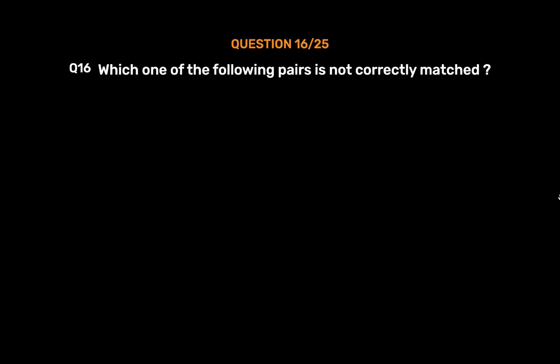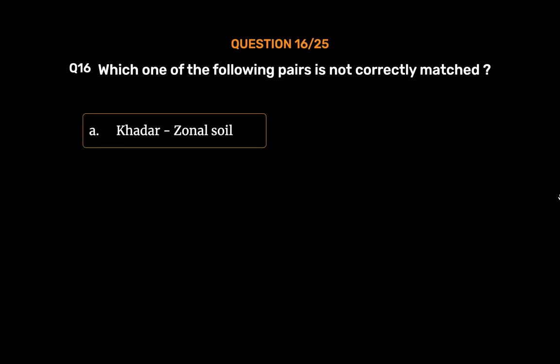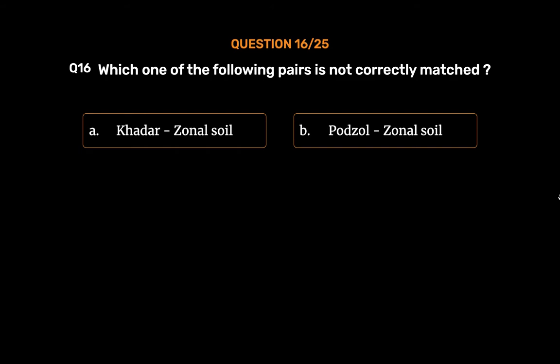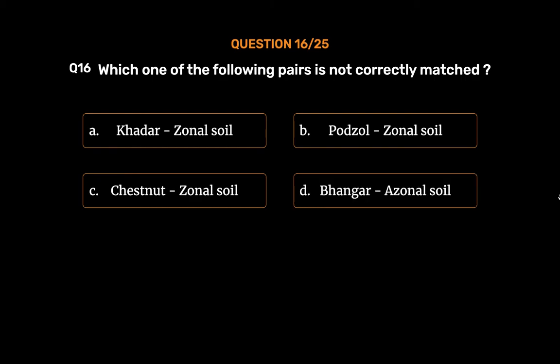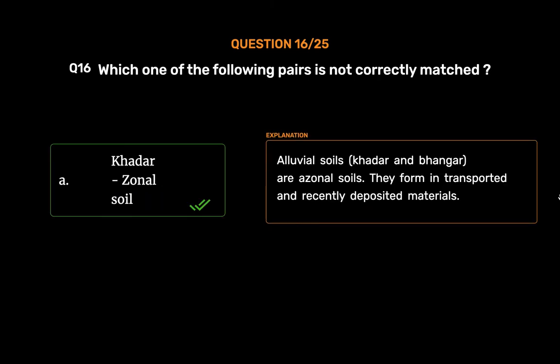Question No. 17: Which one of the following pairs is not correctly matched? Option A: Khadar — zonal soil, Option B: Podzol — zonal soil, Option C: Chestnut — zonal soil, Option D: Bhangar — zonal soil. The correct answer is Option A, Khadar — zonal soil. Alluvial soils — Khadar and Bhangar — are azonal soils. They form in transported and recently deposited materials.